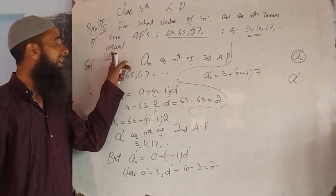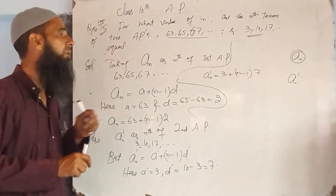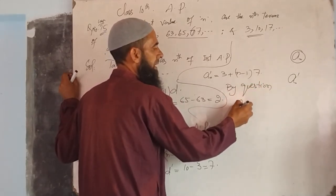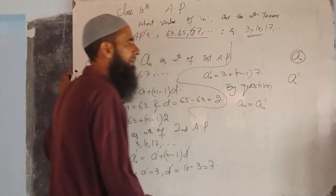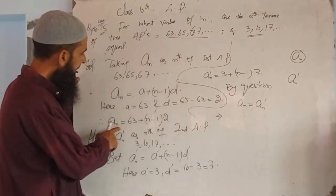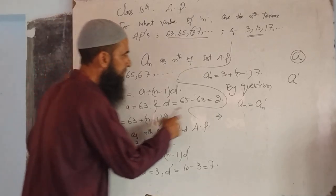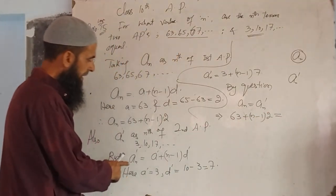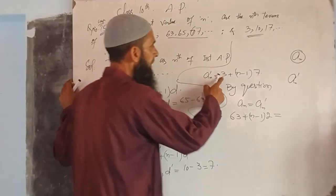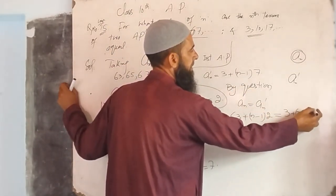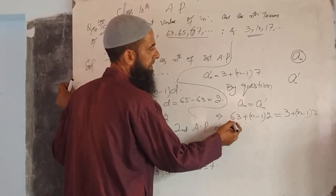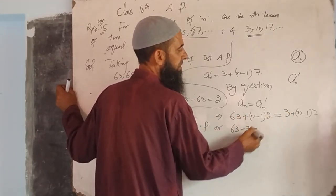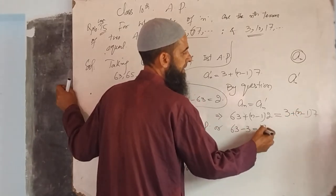Now the question says the nth terms are equal — ush waqt n ka value kya hoga? By question, An is equal to A'n. This implies: 63 plus n minus 1 into 2 is equal to 3 plus n minus 1 into 7. Now simplify this. 63 goes to right side, minus 3. On right side: 7 into n minus 1, that is 7n minus 7.